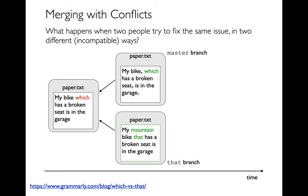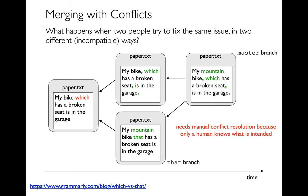The first person on the master branch adds commas and a period — two improvements. Someone else on another branch changes 'which' to 'that' and says 'my mountain bike' instead of 'my bike'. Both versions have something useful: the first has commas and a period, the second changed 'which' to 'that' and added 'mountain'. The wrong thing would be having both commas and 'that' — that's back to bad grammar. We want: 'My mountain bike, which has a broken seat, is in the garage.' — the best of both.